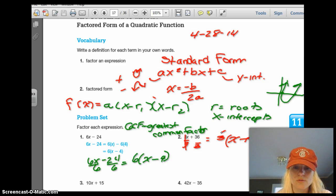And then if you wanted to see if you were right, you could distribute the 3 right back. 3 times x is 3x plus 3 times 12 is 36. So when I multiply that back out, I get back to the original problem. So I know I did that right.